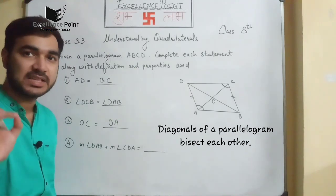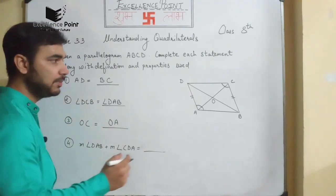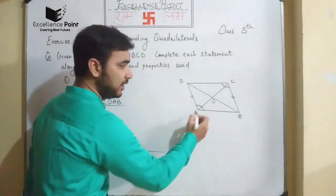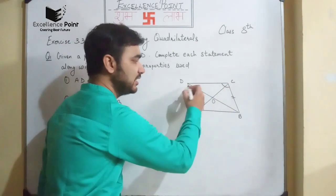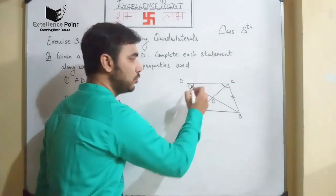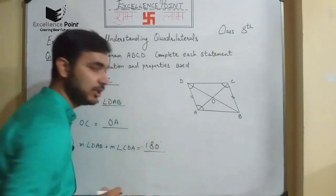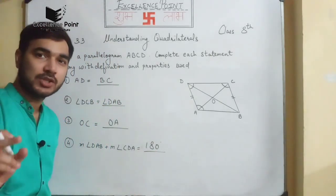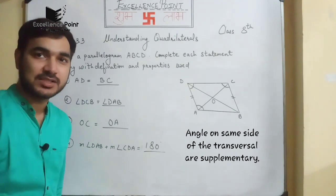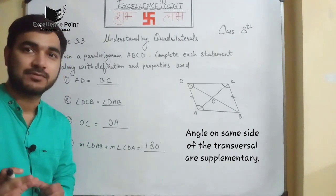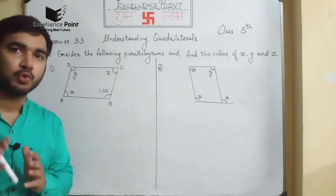For the last one: angle DAB plus angle CDA is equal to what? It will be equal to 180 degrees. Why? Because angles on the same side of a transversal are supplementary. So we have finished with the first question.